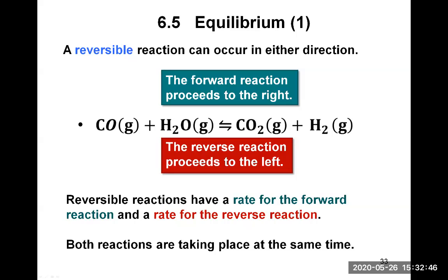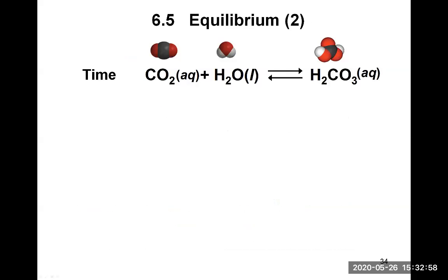Reversible reactions have a rate for the forward reaction and a rate for the reverse reaction, and both reactions are taking place at the same time. As an example, let's look at the equilibrium between carbon dioxide and water with carbonic acid, H₂CO₃, on the right. Above each reactant and product you have the molecular model: CO₂ made of one carbon in black and two oxygen atoms; H₂O made of one oxygen in red and two hydrogen atoms in white; and H₂CO₃ made of one carbon, three oxygen atoms in red, and two hydrogens in white.